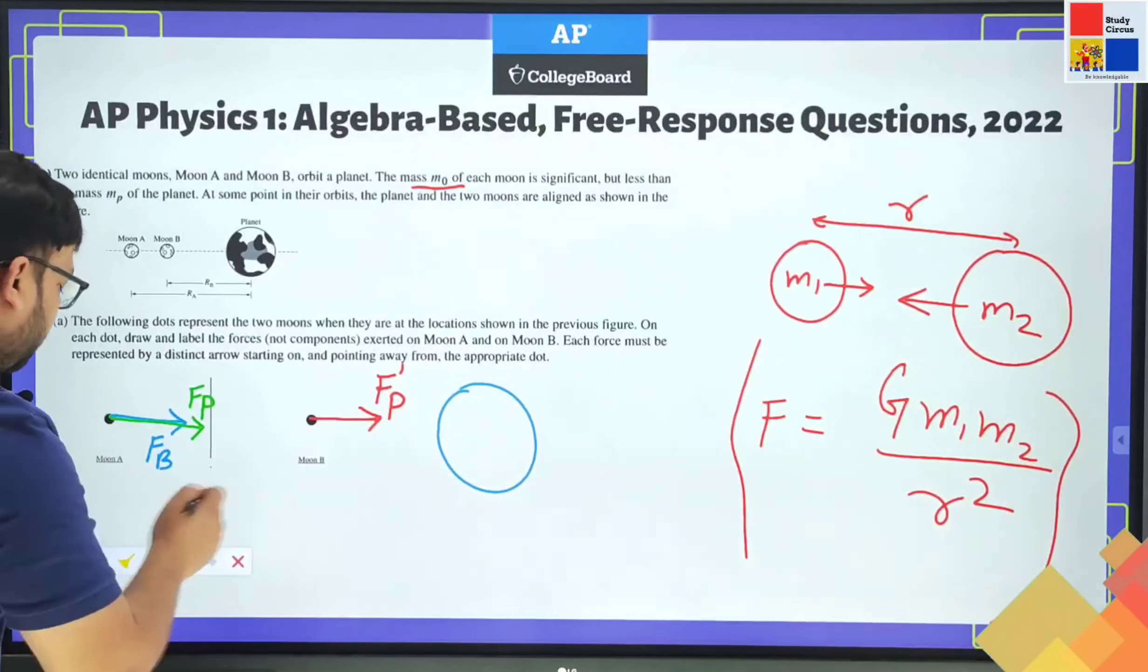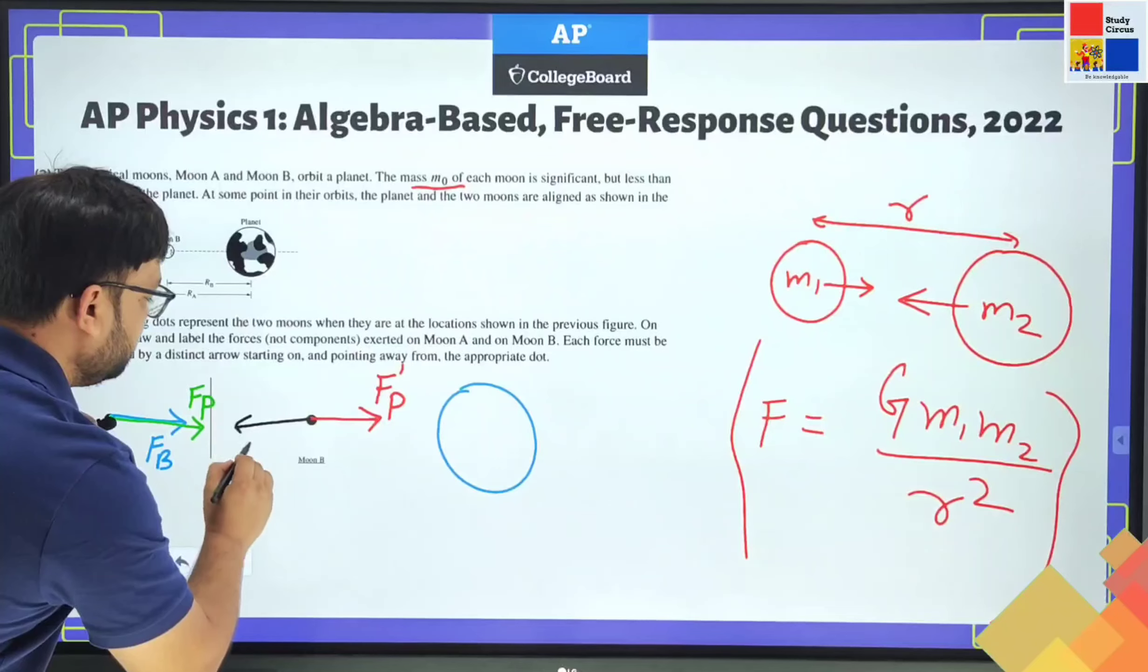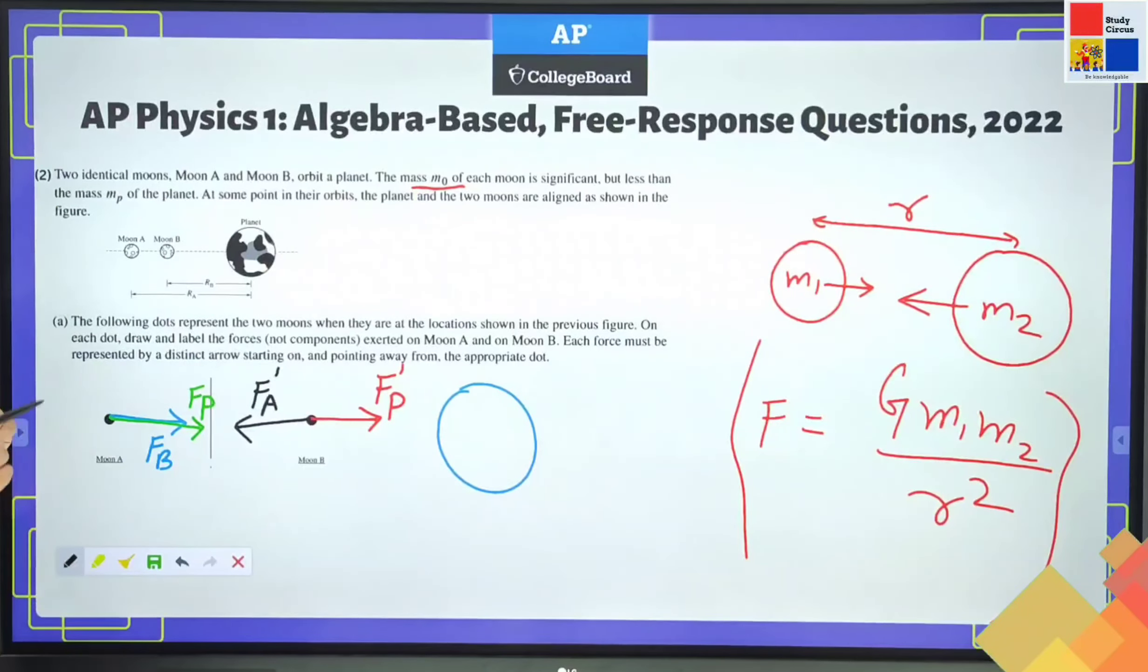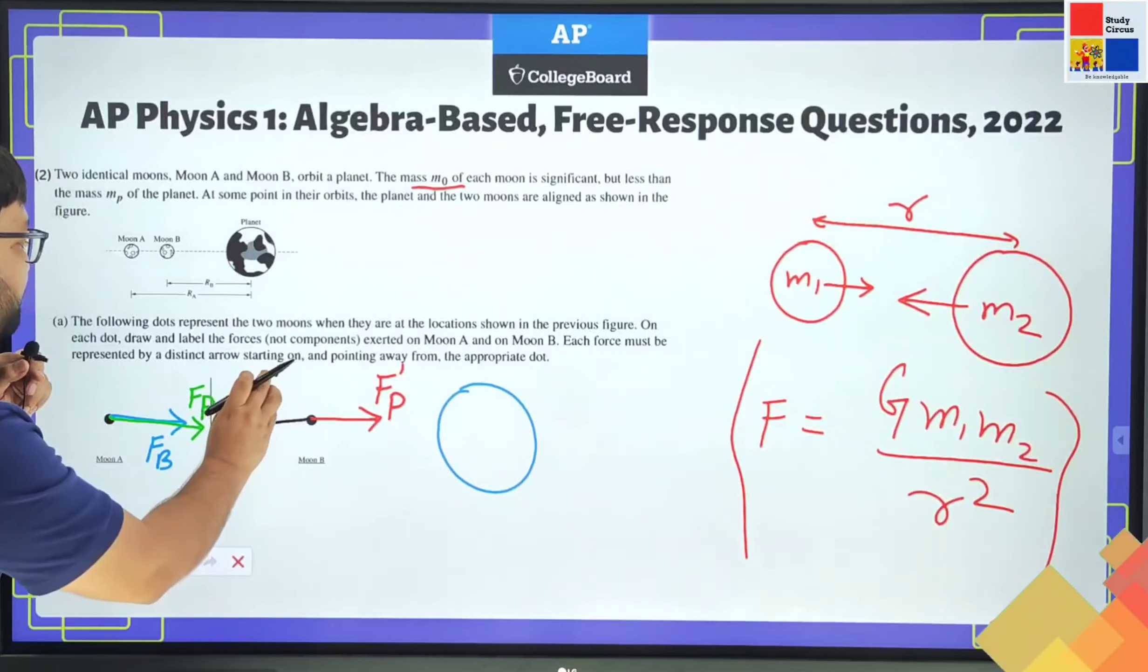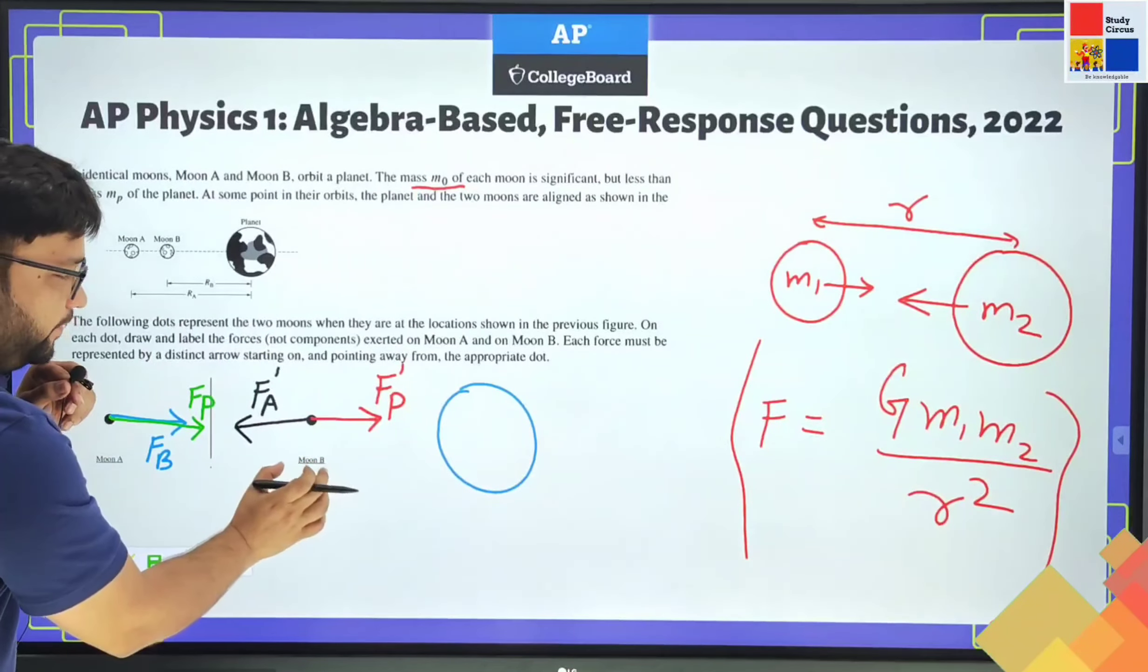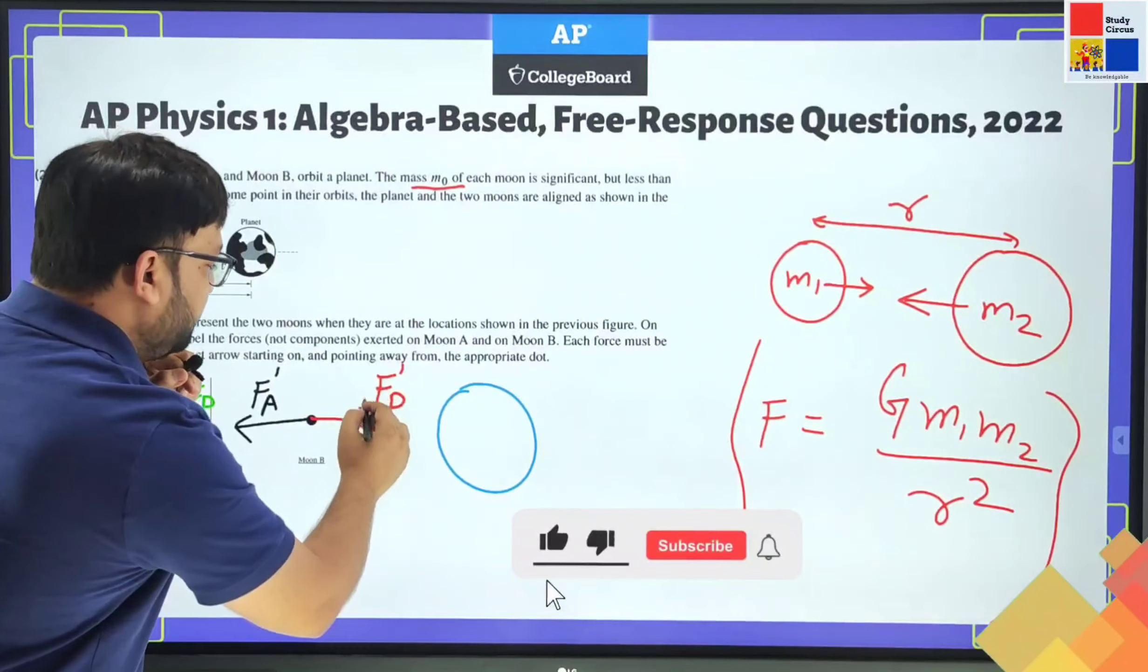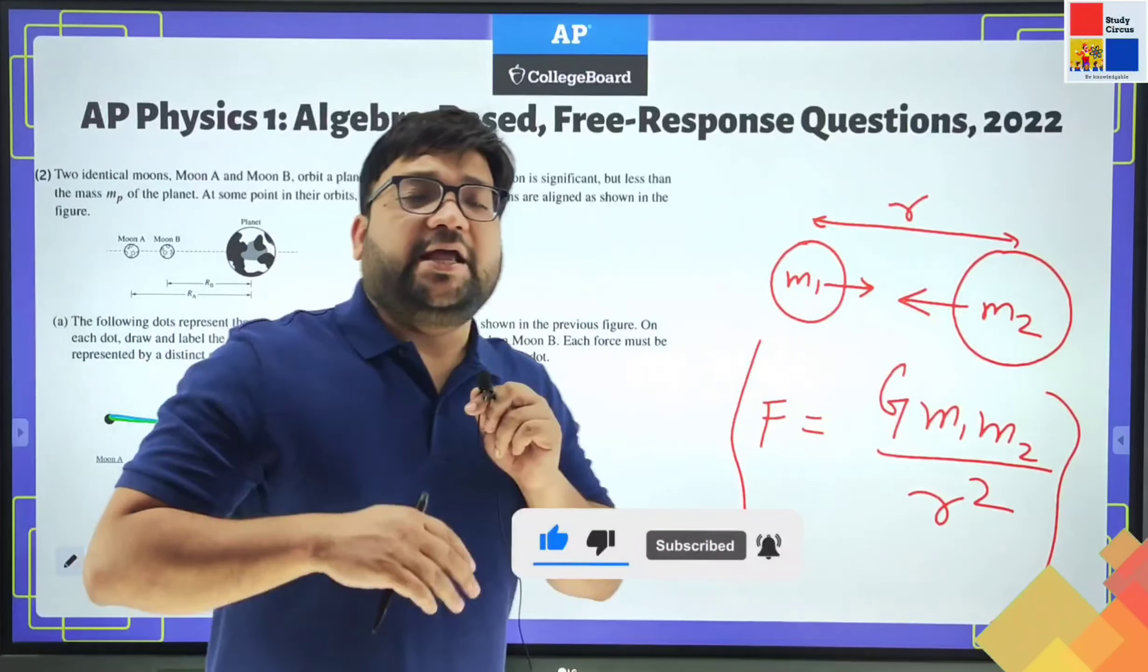And the other force on B is the pull due to moon A. So I can show this way, force due to moon A - let's say F prime. I name the forces. So these are the two forces. F prime is the pulling force due to moon A on moon B I am talking about. And moon B is also being pulled by this attractive force FP prime towards this planet.